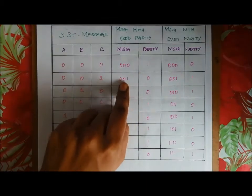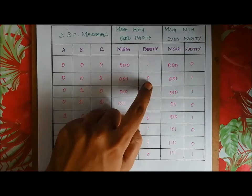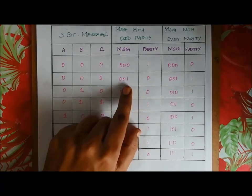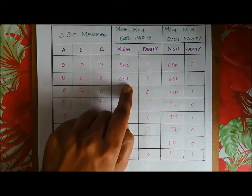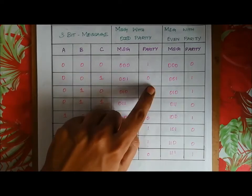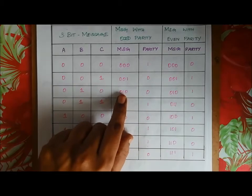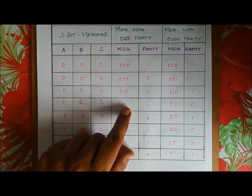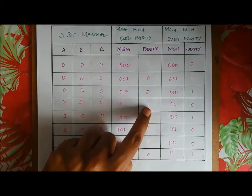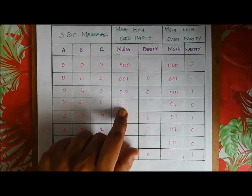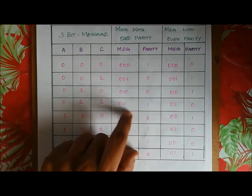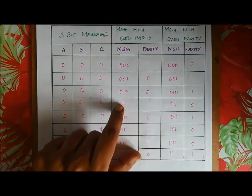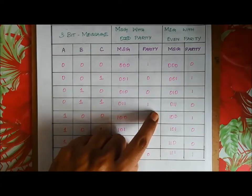For message 0 0 1: the total number of 1s is 1, which is already odd. So we add parity bit 0. The total number of 1s remains 1 — odd. For message 0 1 0: total number of 1s is 1. Since 1 is odd, we add parity bit 0. Total is 1, still odd.